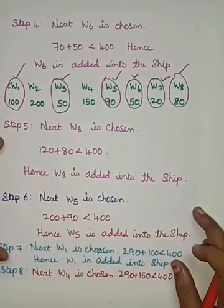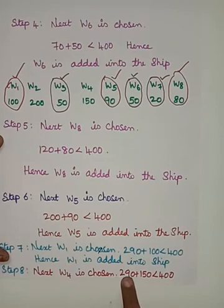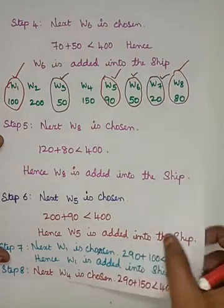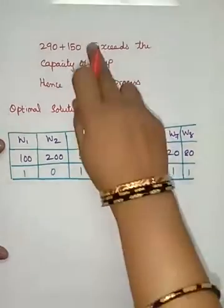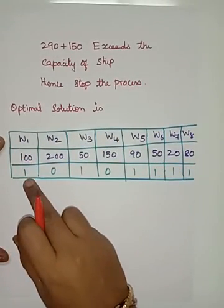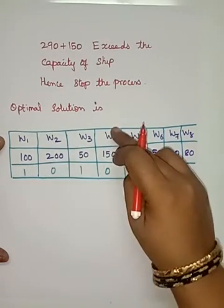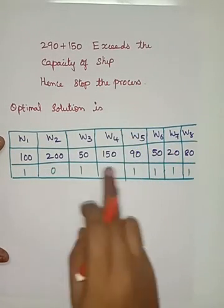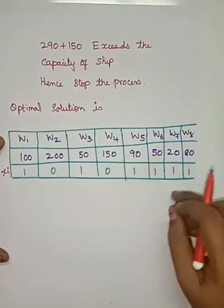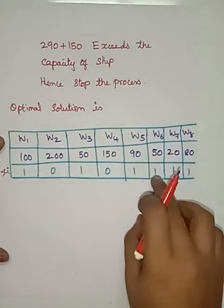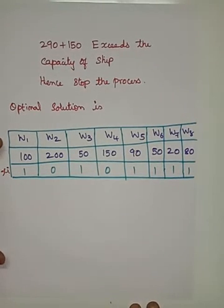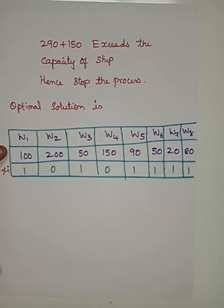Now only w2 and w4 remain. Trying w4: 290 plus 150 exceeds 400, so it cannot be loaded. W2 and w4 cannot be loaded at all as they would exceed the ship's capacity, so we stop the process. W2 and w4 are not loaded, so xi is marked as 0 for those. All containers that were loaded are marked as 1, and those not loaded are marked as 0.